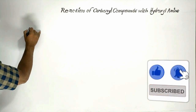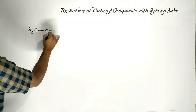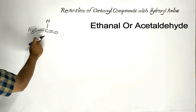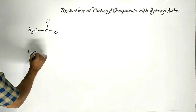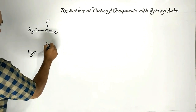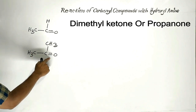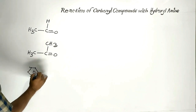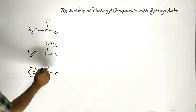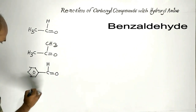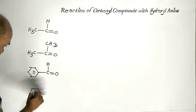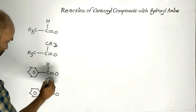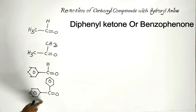Carbonyl compounds. Let us consider these. This is ethanal or acetaldehyde. This is dimethyl ketone or propanone. This is benzaldehyde. This is benzophenone. These are our carbonyl compounds.